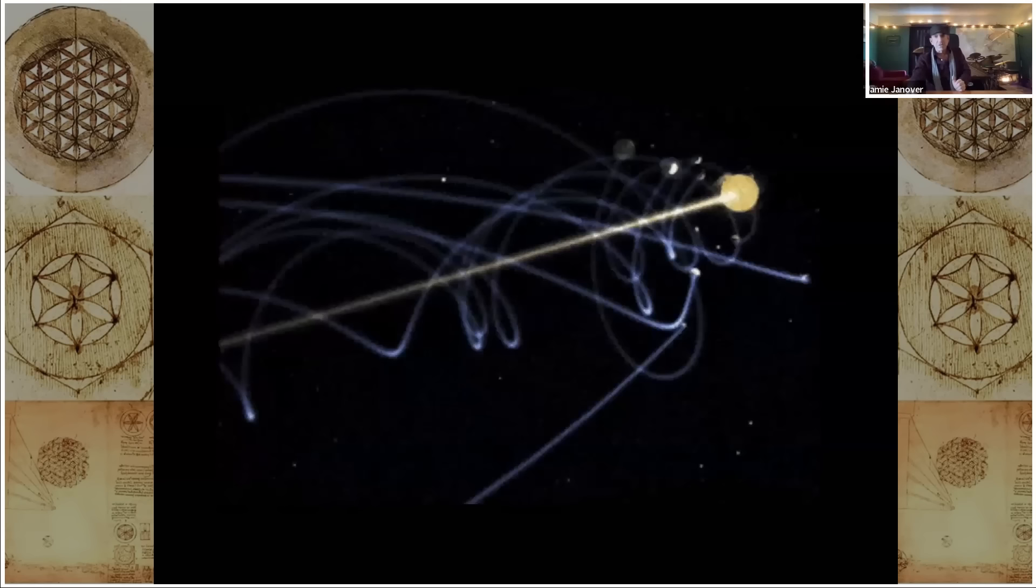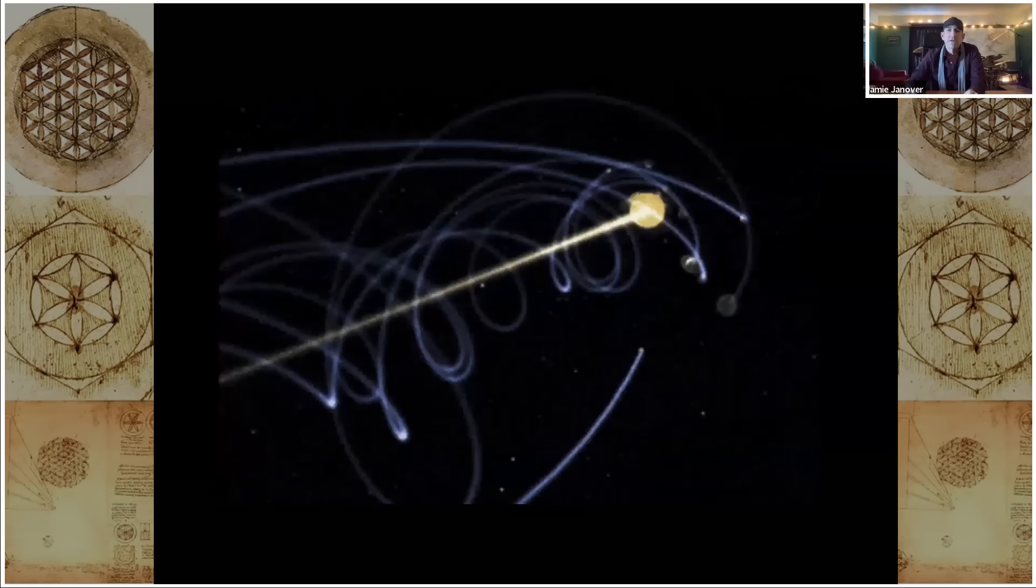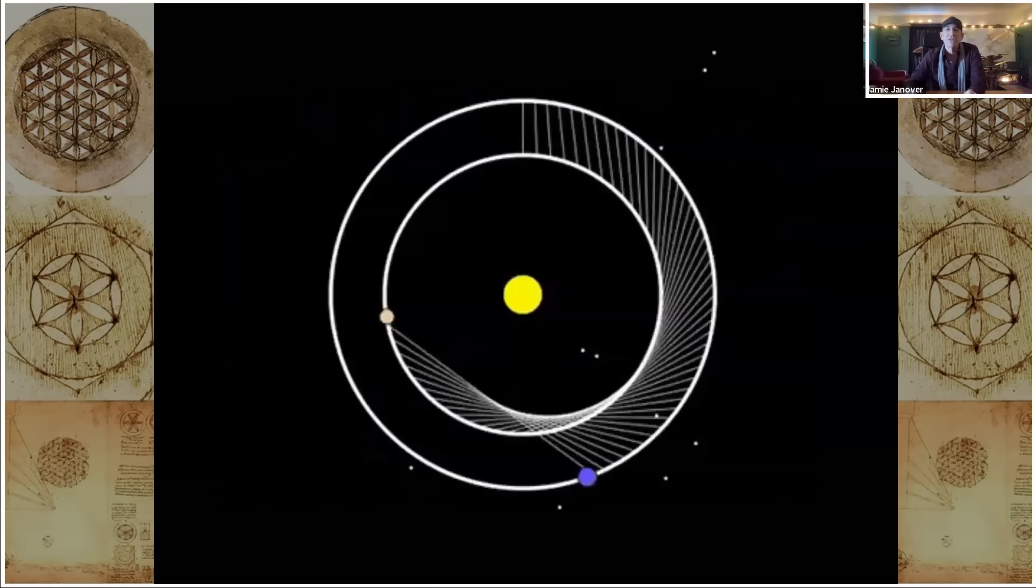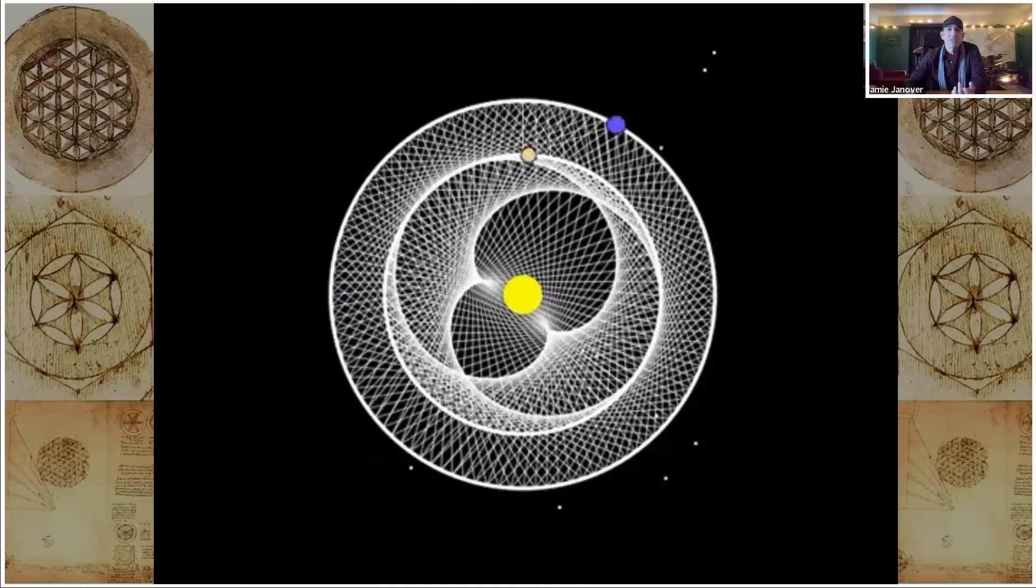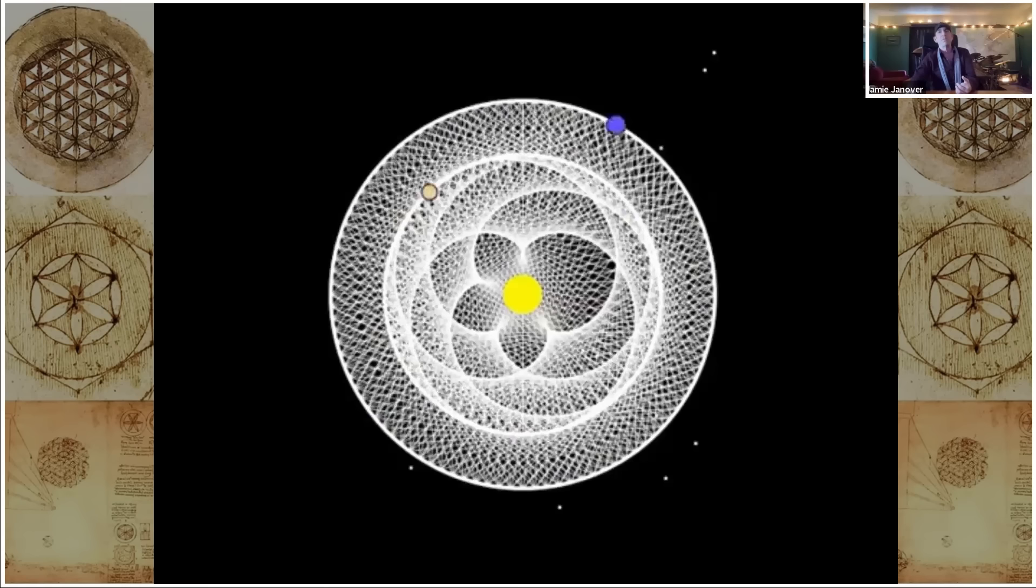People have taken that animation and then improved upon it. But it's basically showing that the sun is moving through the galaxy. As the galaxy rotates, the planets are spiraling around the sun as it moves. So every planet is making a helical structure. And each planet is making a different size helical structure because they have different orbits. And so here's kind of a 2.0 version of that.